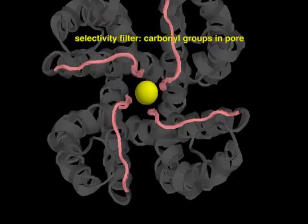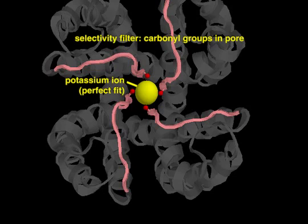In this selectivity filter, carbonyl groups line the walls of the pore. These carbonyl groups are spaced precisely to interact with an unsolvated potassium ion, balancing the energy required to remove its hydration shell. Passage of a sodium ion through the channel is energetically unfavorable, because the sodium is too small for optimal interaction with the carbonyl groups.